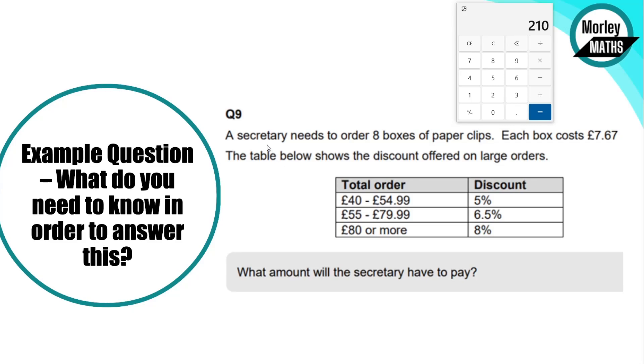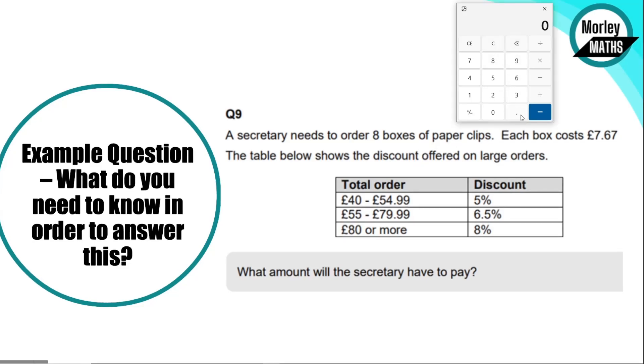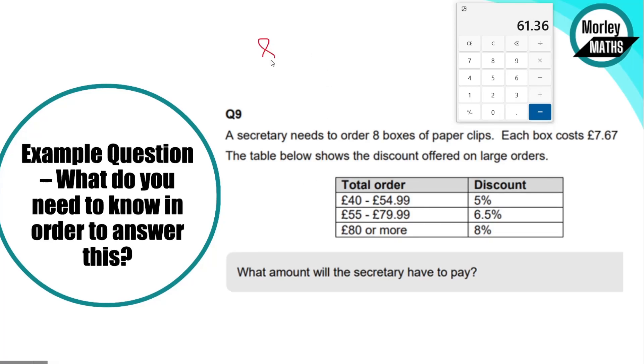For this one, a secretary needs to order 8 boxes of paperclips. Each box costs £7.67. The table below shows the discount offered on large orders. What amount will the secretary have to pay? Basically with this question, we need to find out how much we're going to be spending in total to start off with. So we've got 8 boxes, each box is £7.67, so that's going to give us a total of £61.36.